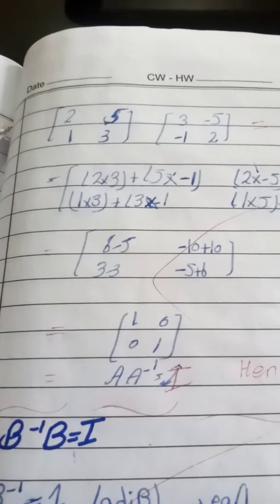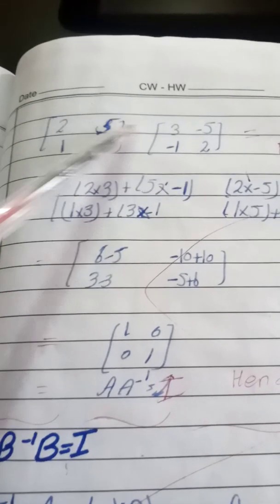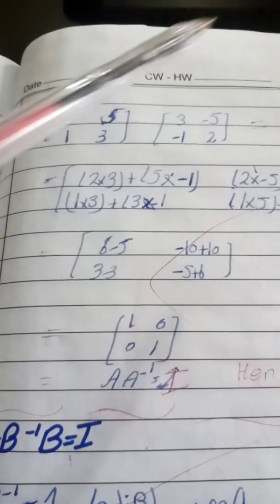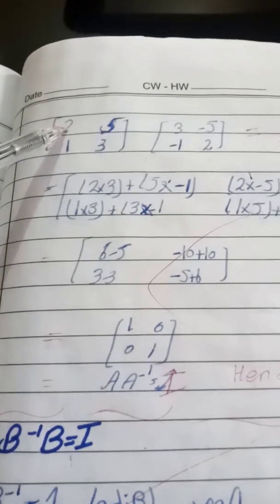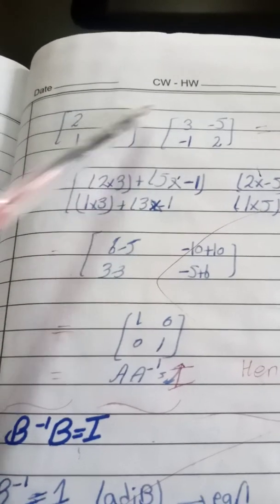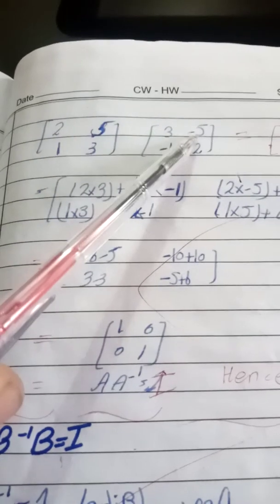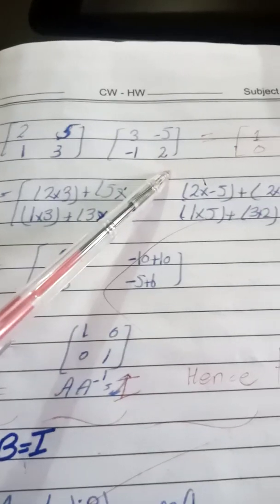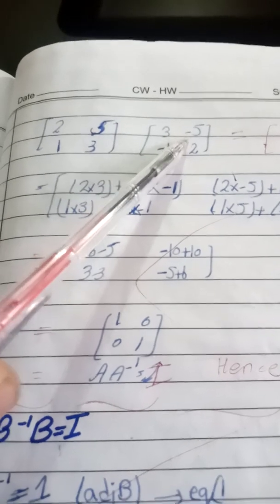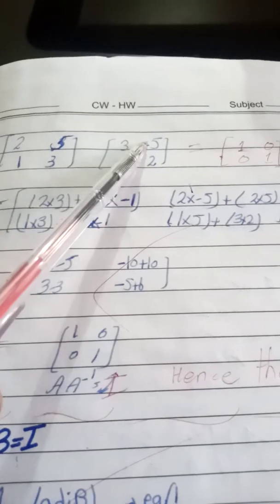We multiply both matrices according to the rule of matrix multiplication: first row times first column, then first row times second column. So: 2 into 3 plus 5 into minus 1 gives the product of the first row and first column. Then 2 multiplied by minus 5 and 5 multiplied by 2 gives the first row and second column.